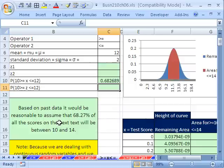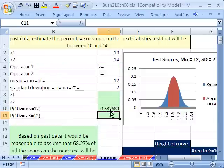So based on past data, it would be reasonable to assume that 68.27% of all scores on the next test will be between 10 and 14. That fits our rule. We could have figured that one out without doing our calculations.